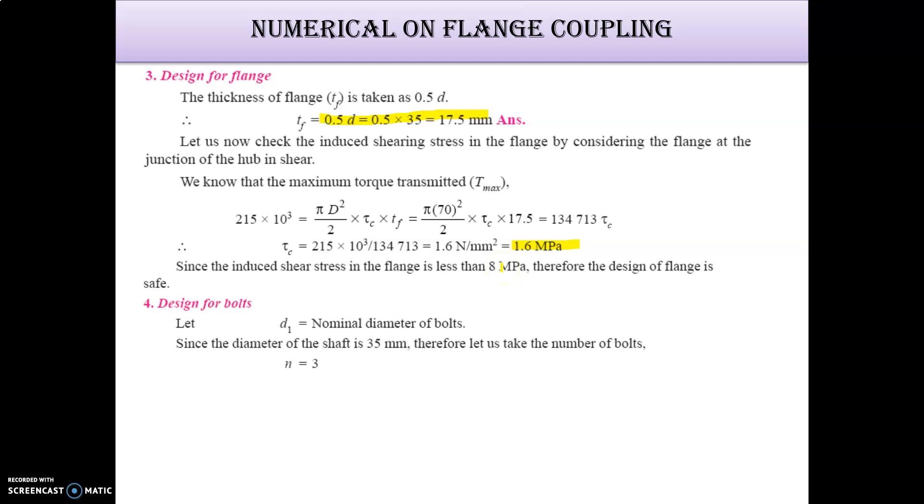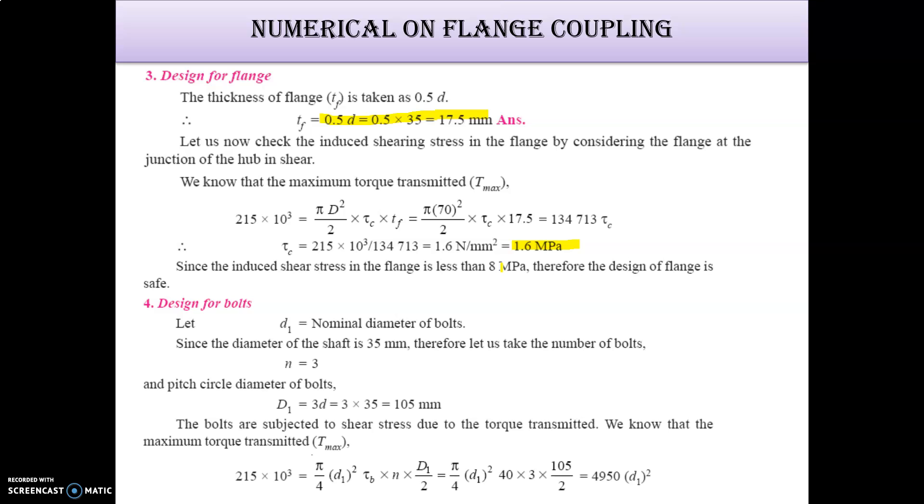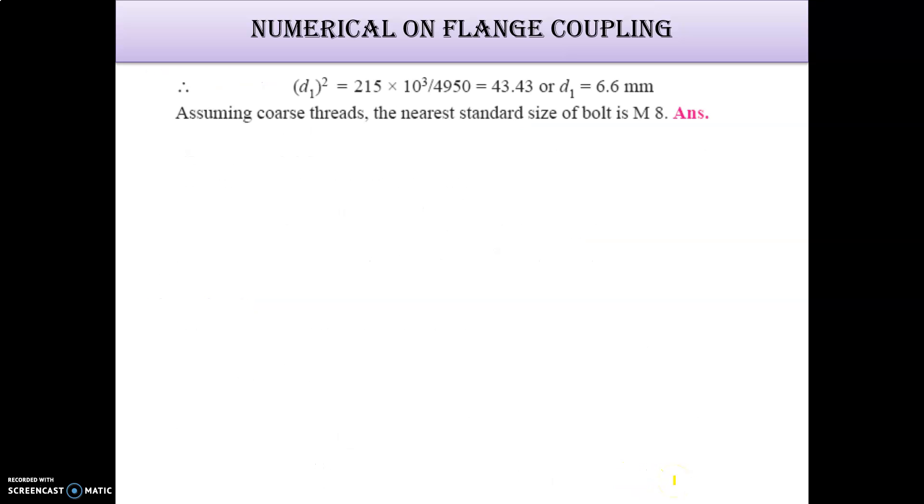Now for the bolt, we know that up to 40mm, N should be 3, that is number of bolts should be 3. So N equals 3. Put in the formula, D1 equals 3 times small d, that is 105mm. T max equals pi by 4 D1 square tau B into N into capital D1 by 2. So we get D1 equals 6.6mm. It's a standard part, a threaded part. The table shows that the nearest value is M8, that means 8mm. So we are going to use 8mm bolt here.